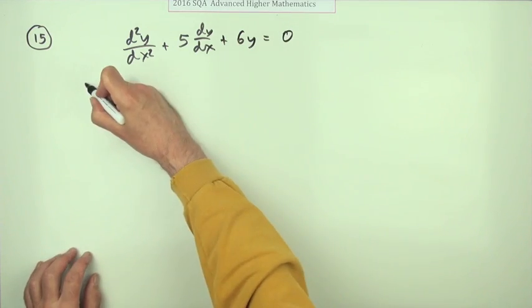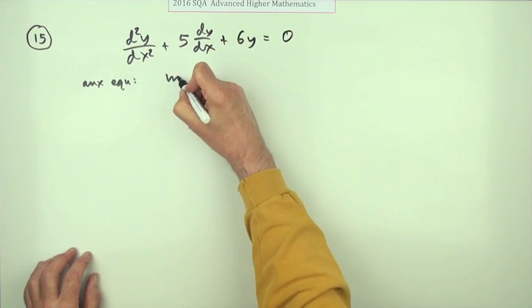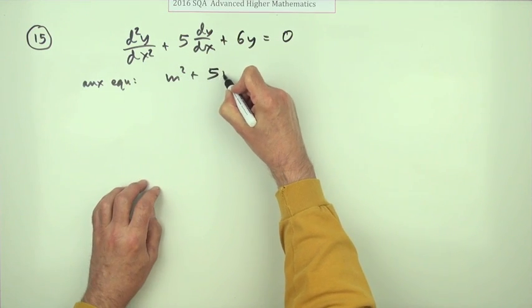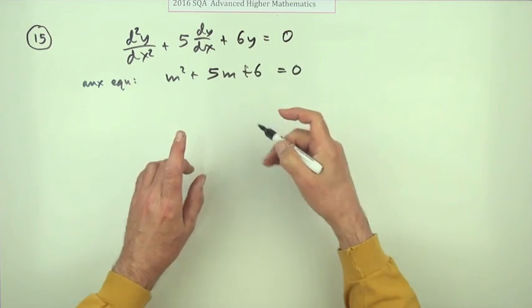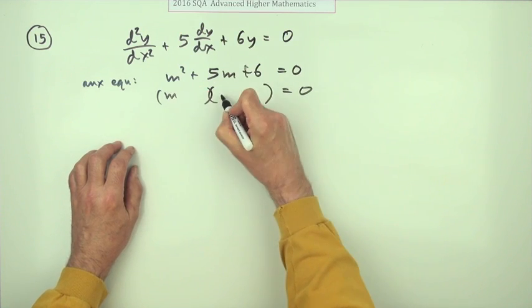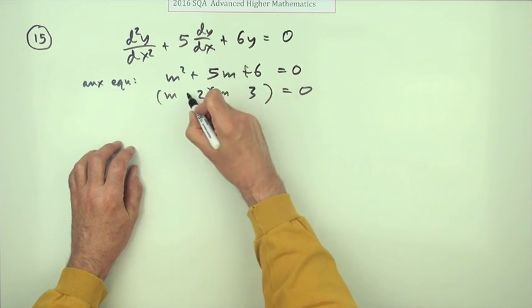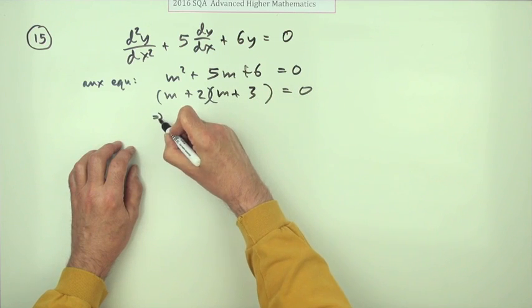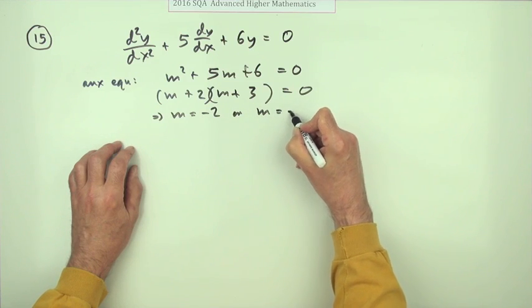This equal to zero. So we'll get the auxiliary equation, which will just be m squared plus 5m plus 6 equals 0. Breathe a sigh of relief. As you notice, that factorizes very nicely. m, m, multiply to give 6 and add to give 5, 2 and 3, plus, plus, which means m equals negative 2, or m equals negative 3.